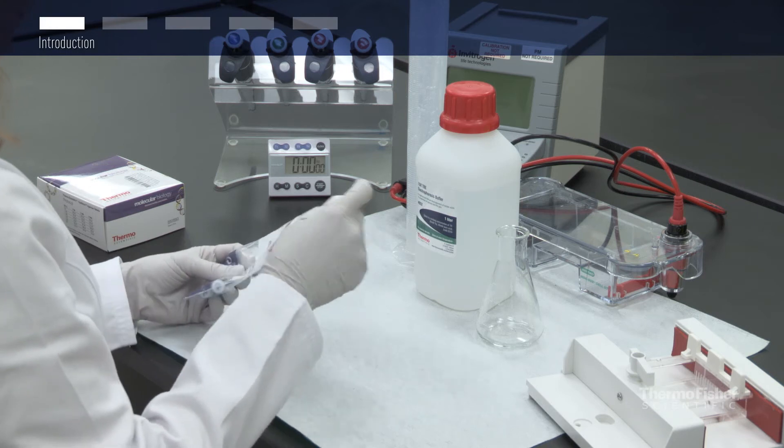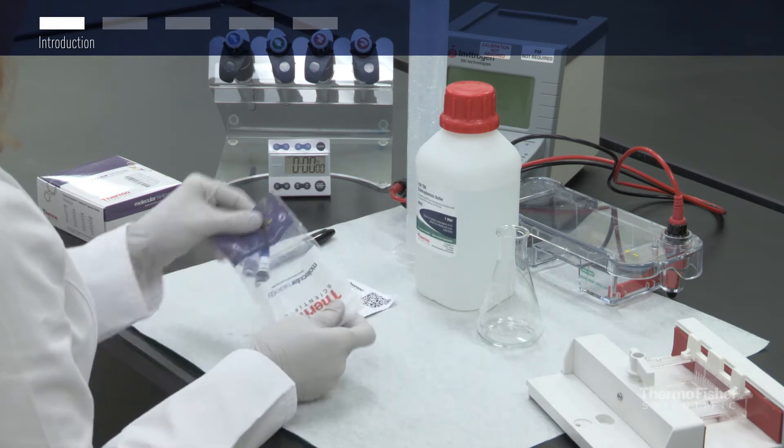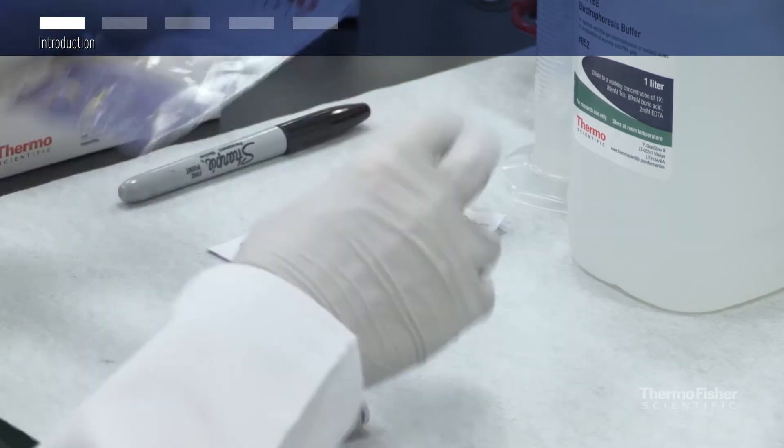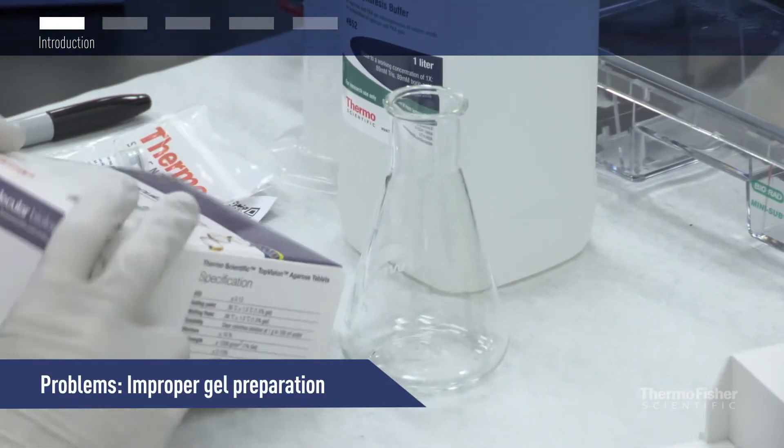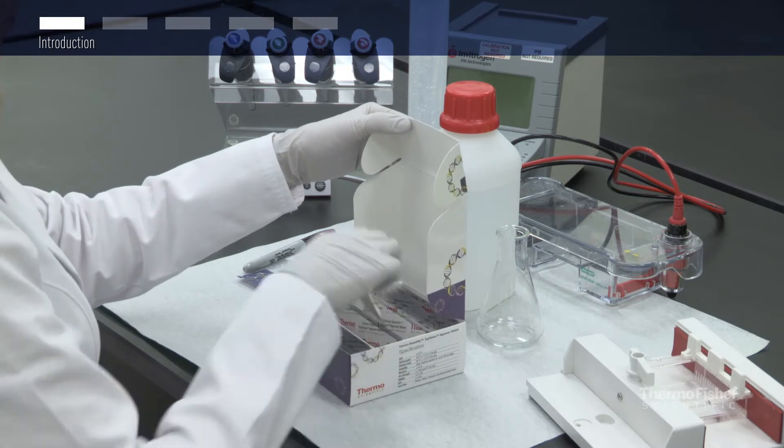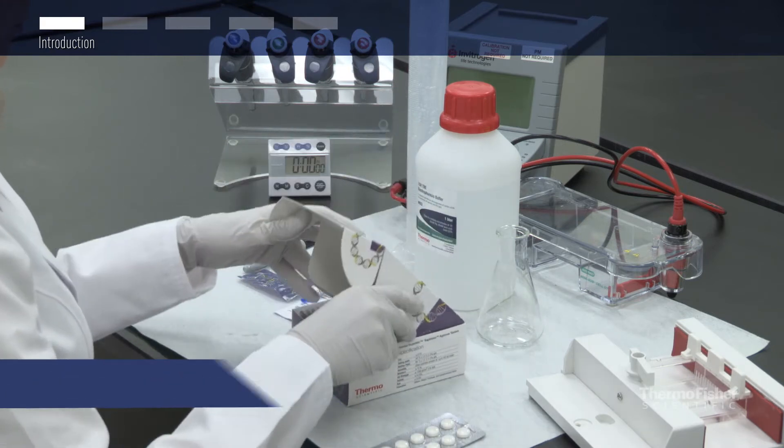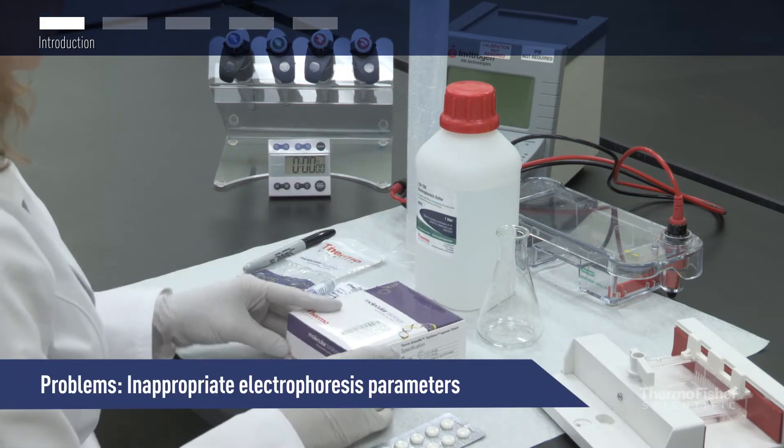When running agarose gel electrophoresis, a high-quality DNA ladder is essential. But problems can arise and often stem from the following areas: improper gel preparation, overloading the gel, and inappropriate electrophoresis parameters.